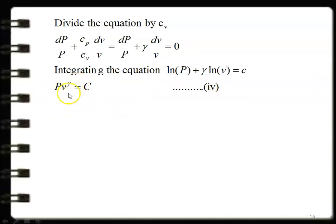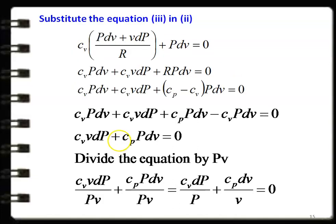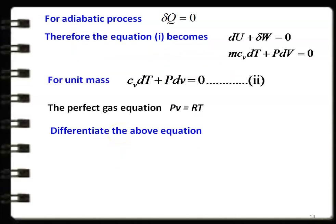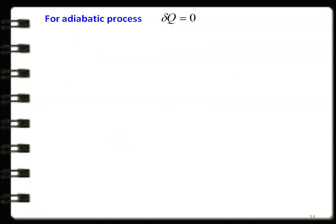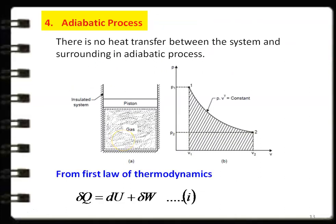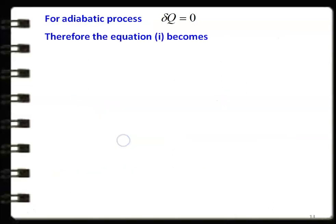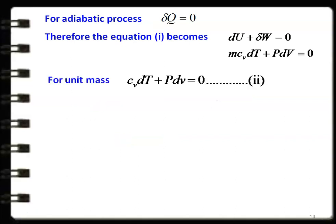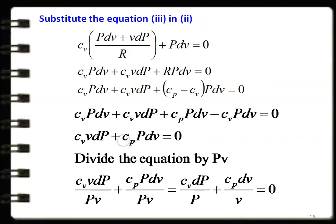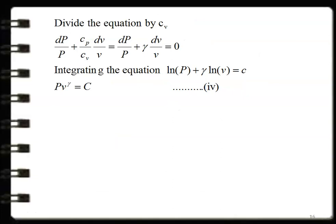Integrating: ln(P) + γ·ln(v) = constant, which gives ln(P·v^γ) = constant, and taking the antilogarithm: P·V^γ = constant. This is the condition for the adiabatic process, derived from the first law and the perfect gas equation. For examinations, especially competitive ones, it is important to be able to derive P·V^γ = constant analytically.